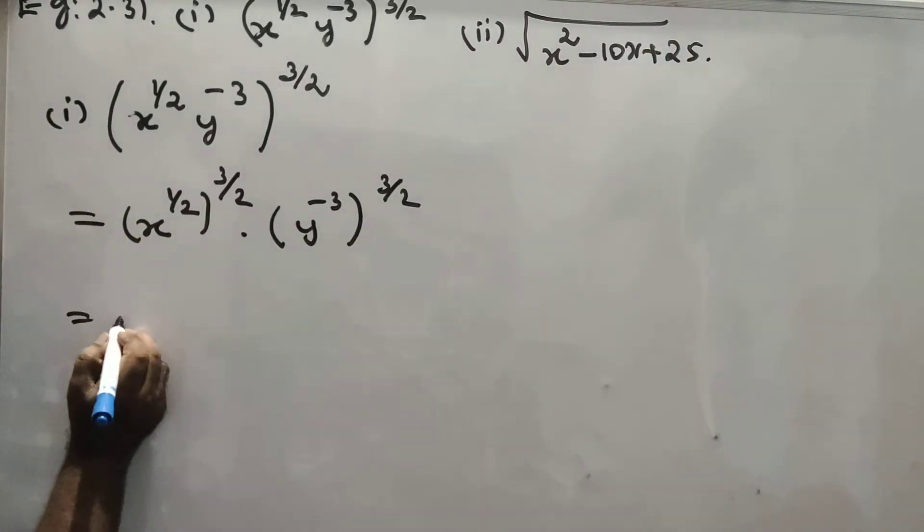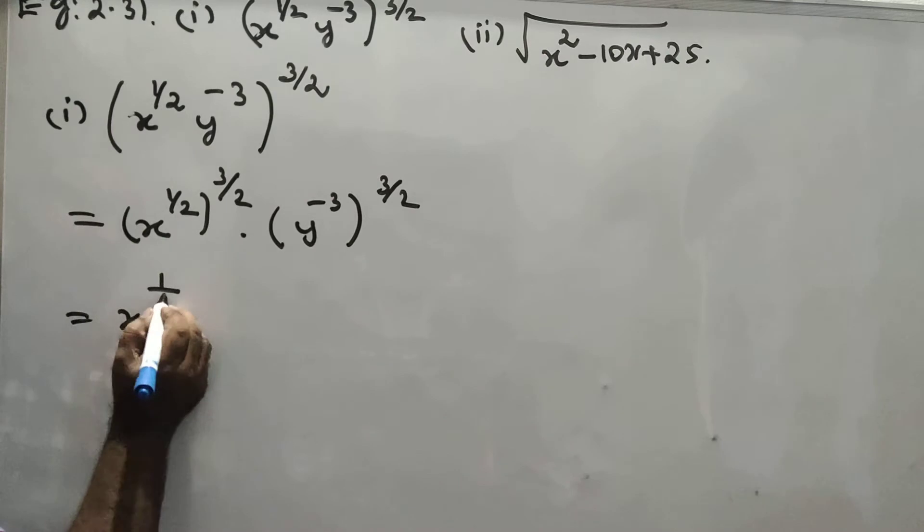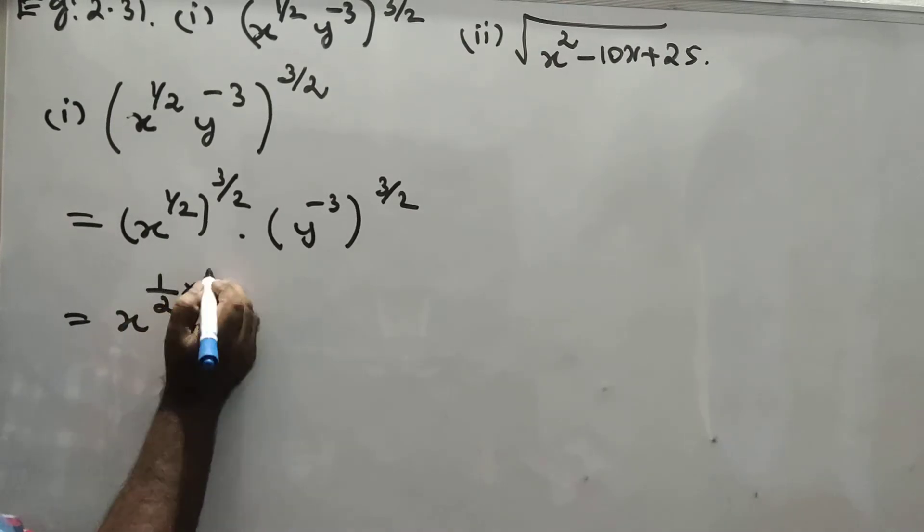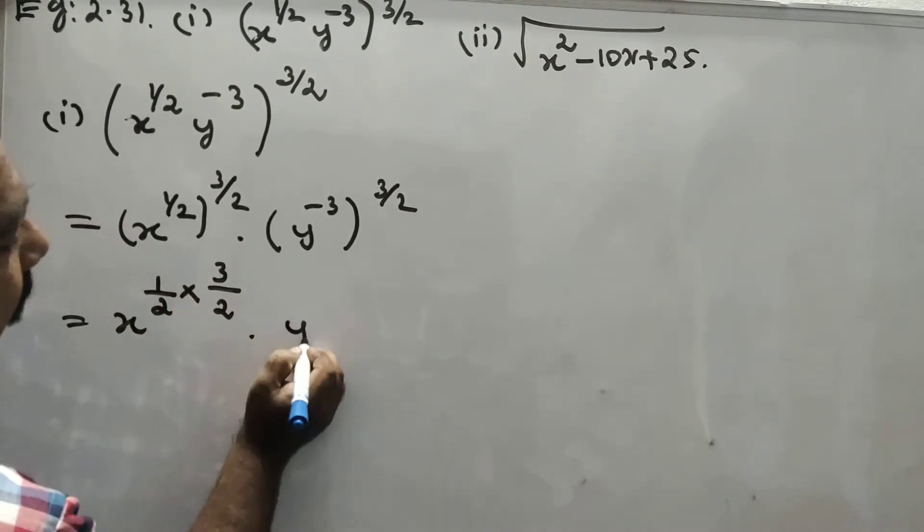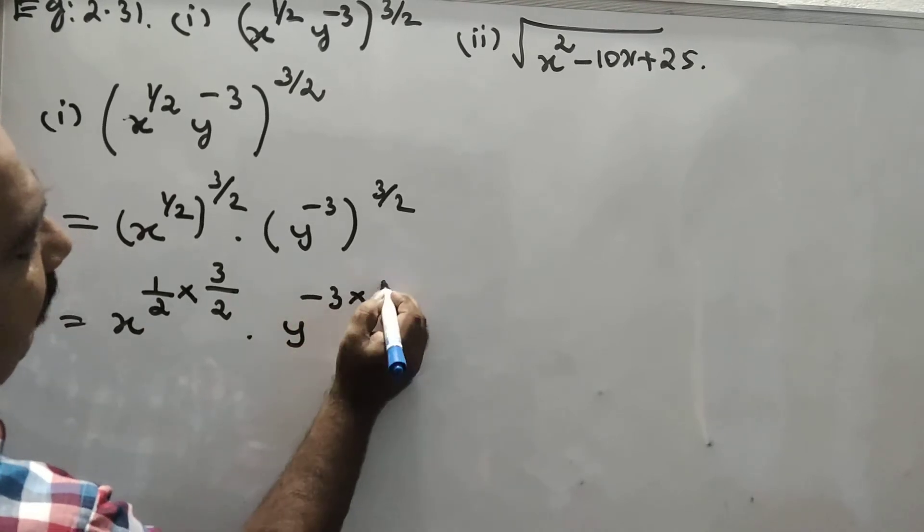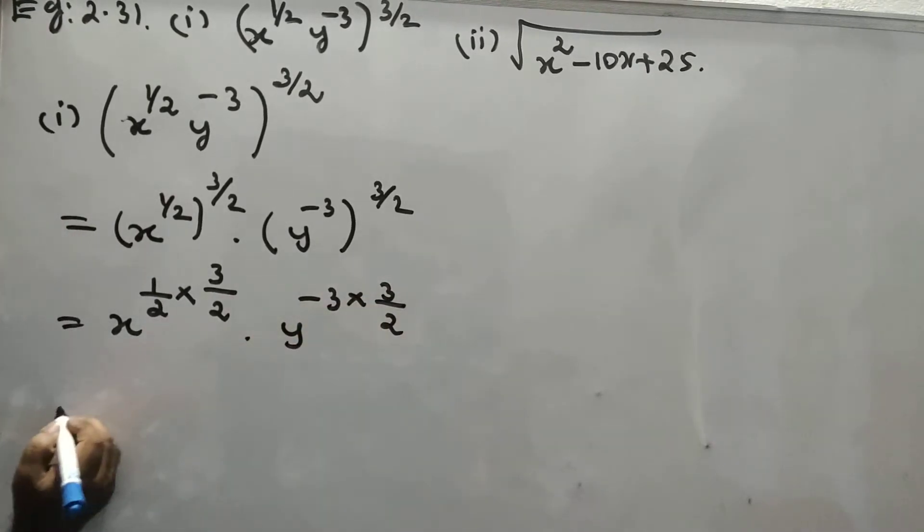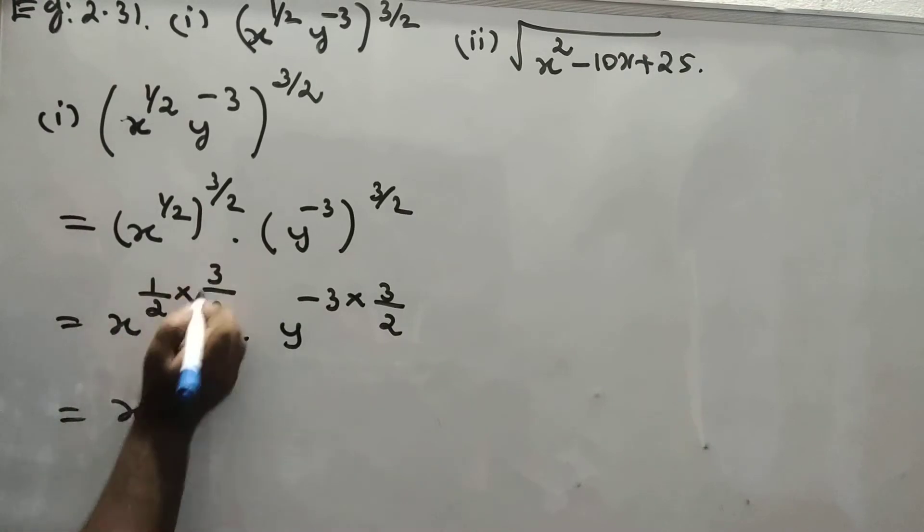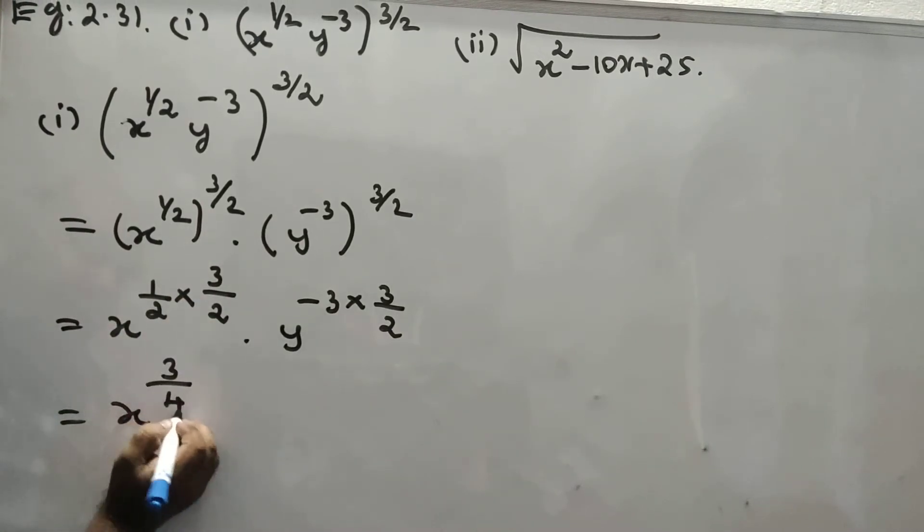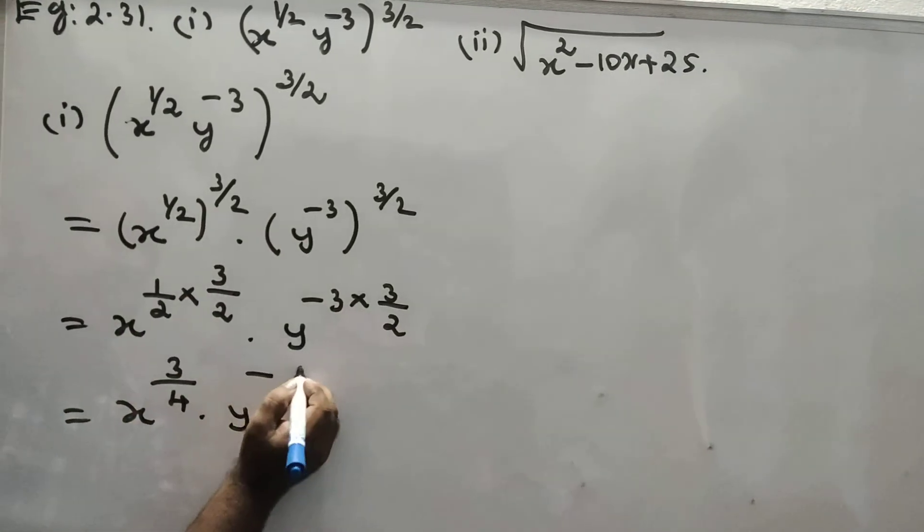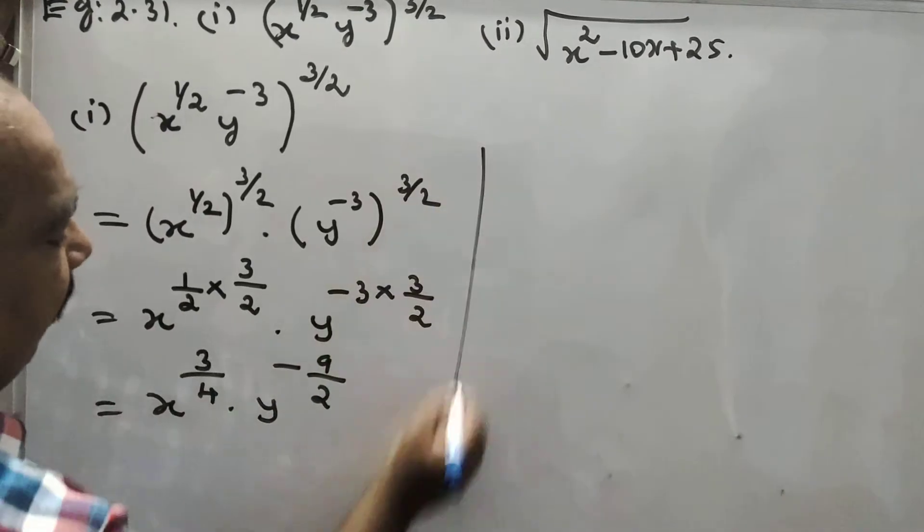Multiply: x power 1 by 2 into 3 by 2, y power minus 3 into 3 by 2. That is x power 3 by 4, y power minus 9 by 2. This is the answer.